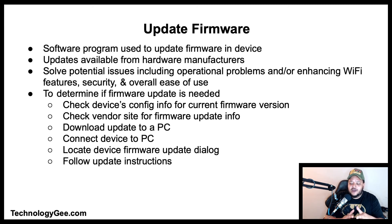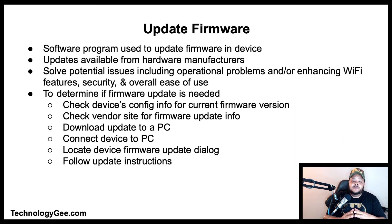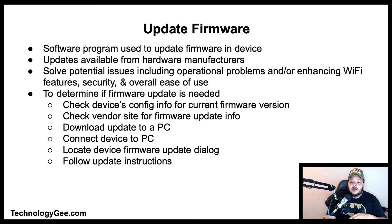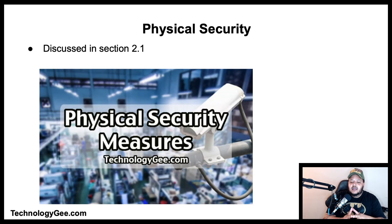Updating firmware: a firmware update is a software program used to update the firmware in a device such as a wireless access point or wireless router. Firmware updates from hardware manufacturers can solve operational problems and enhance Wi-Fi features, security, and ease of use. To update: check the device's configuration to record the current firmware version and model number; check the vendor's website for available updates; download the update to a PC connected via Ethernet; locate the firmware update dialogue on the device; and follow the instructions to commence the update.